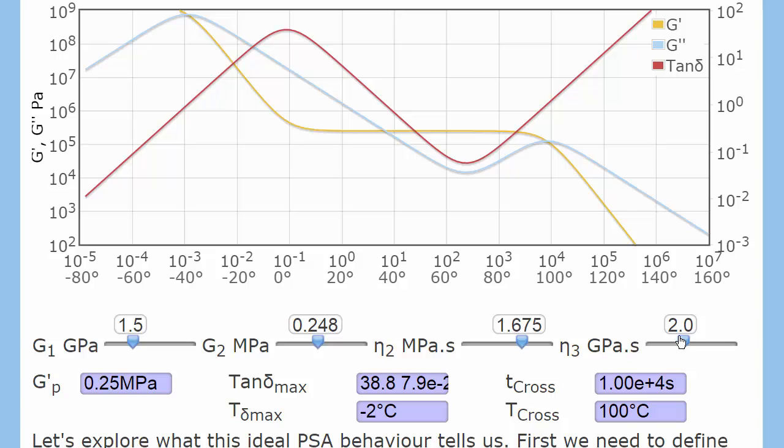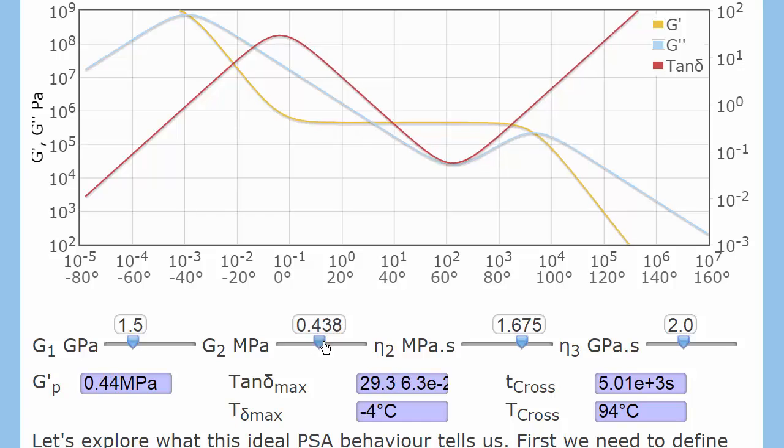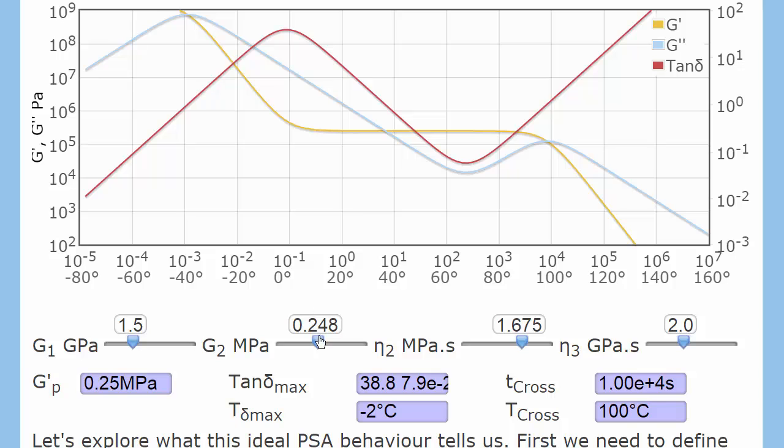Now, this is called the ideal PSA model, because let's notice what happens. We'll keep this constant. As I change G2, basically nothing much happens other than this goes up and down.